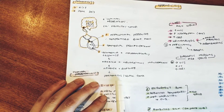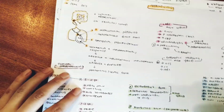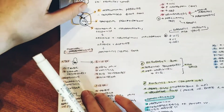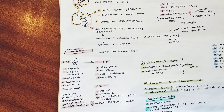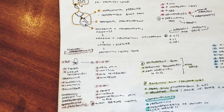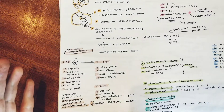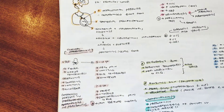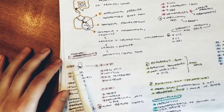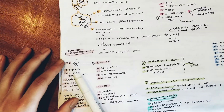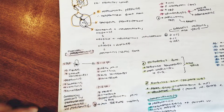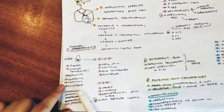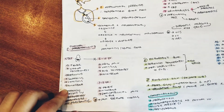Appendicitis in younger children presents slightly differently from adults, and also varies by age group: below 5 years, between 5 to 12 years, and 12 years or older. In children less than 5 years old, they usually present with fever, diffuse tenderness, rebound, guarding, vomiting, and anorexia — which refers to decreased appetite.